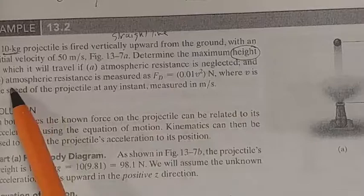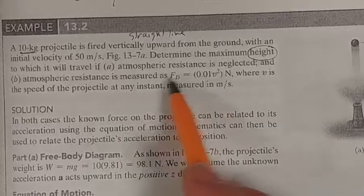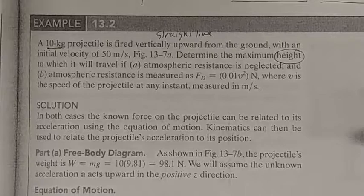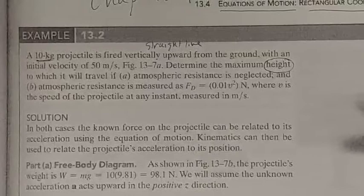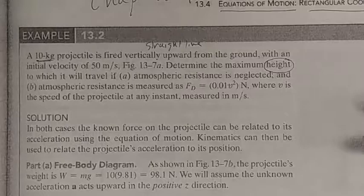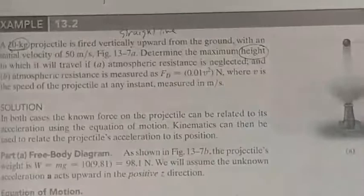we need to determine the height. If B, atmospheric resistance is not neglected and is measured as this. But we'll get to this in a moment. So the first one is what we've done before. We just shoot this projectile up. And what we did before in chapter 12 is we only studied the kinematics, meaning we only studied its position, its velocity, and its acceleration. But now,